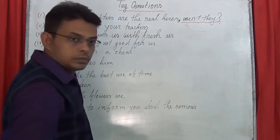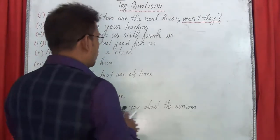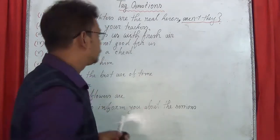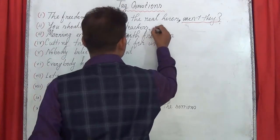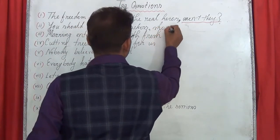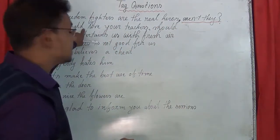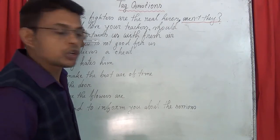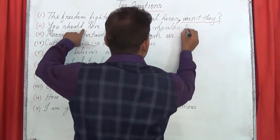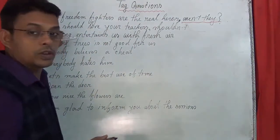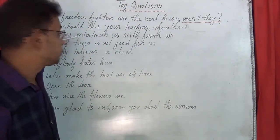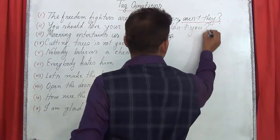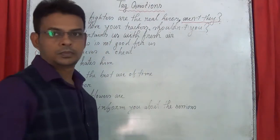The auxiliary here is 'should.' So first, add a comma, then the auxiliary verb 'should.' The sentence is affirmative, so you have to use the negative form — in short, 'shouldn't.' Now the subject is already a pronoun — 'you.' So the tag question is: 'shouldn't you?' with a question mark.